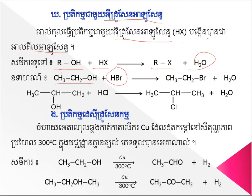Ethanol is used in a bromide, which is used in ethyl bromide. It has always been derived from ethyl bromide because of the use of oxygen.